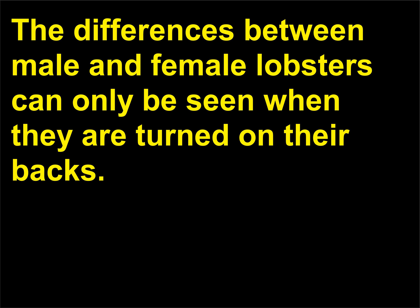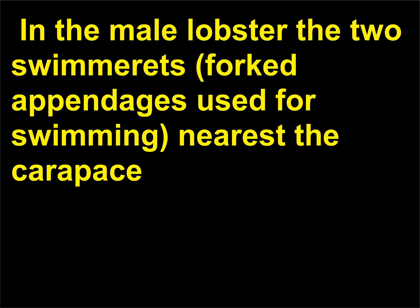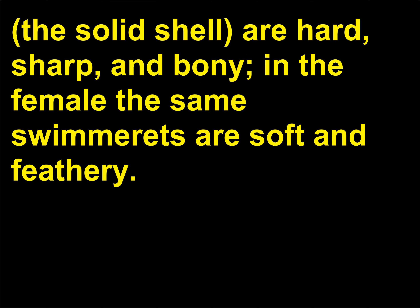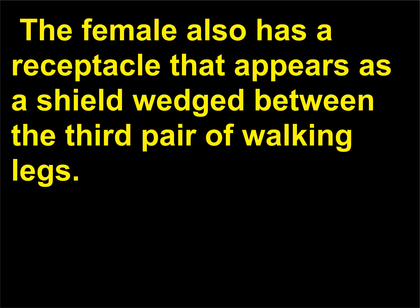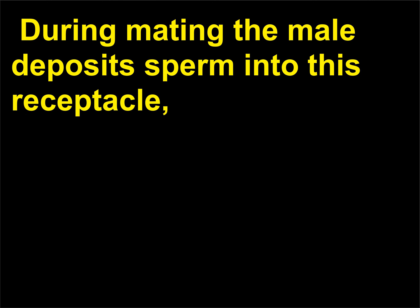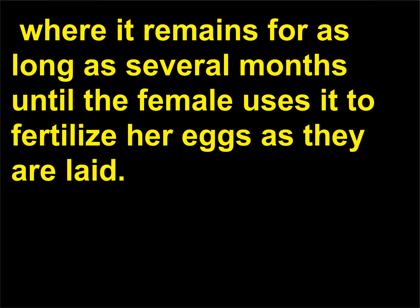How can you tell male and female lobsters apart? The differences between male and female lobsters can only be seen when they are turned on their backs. In the male lobster the two swimmerettes — forked appendages used for swimming — nearest the carapace (the solid shell) are hard, sharp, and bony; in the female the same swimmerettes are soft and feathery. The female also has a receptacle that appears as a shield wedged between the third pair of walking legs. During mating the male deposits sperm into this receptacle, where it remains for as long as several months until the female uses it to fertilize her eggs as they are laid.